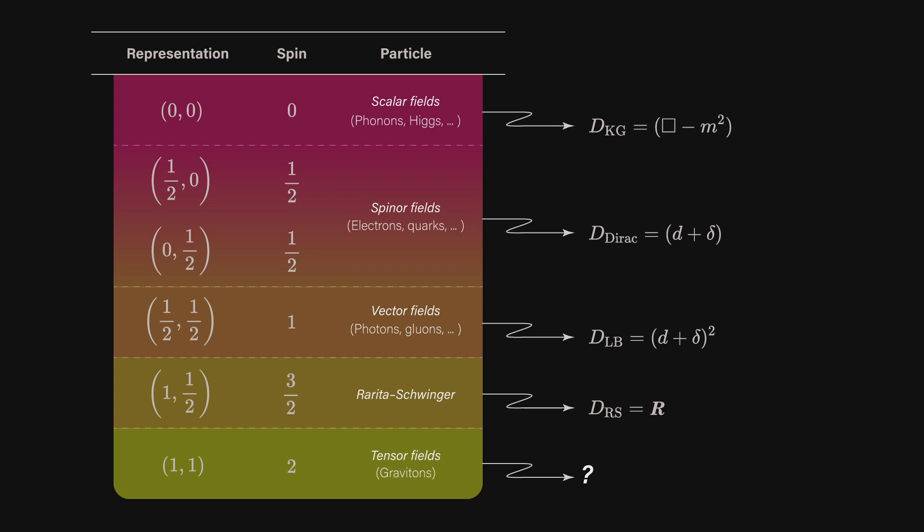Doing some more math, you end up that you can classify representations of this group by means of its lowest weights. The weights come in terms of half units. For every half unit you add, which we'll anticipate interpretation as half units of spin, there is a different type of equation that represents particle motion and a different type of field. Therefore, from the symmetries of spacetime, we get the different types of particles in the standard model.